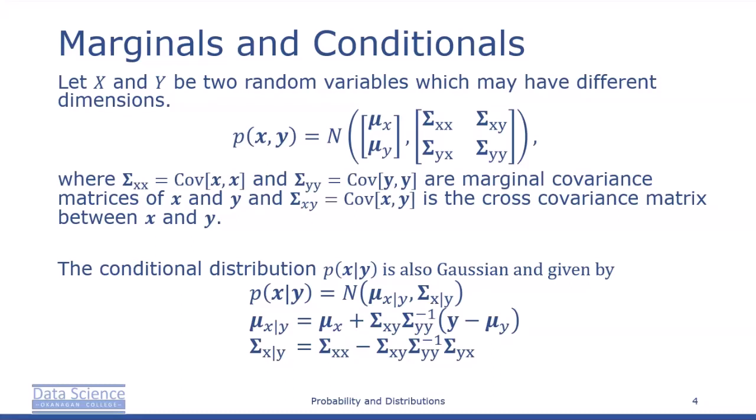The conditional distribution — the probability of x given y — is also Gaussian and is given by: probability of x given y is normally distributed with mean mu x given y and covariance matrix sigma x given y.